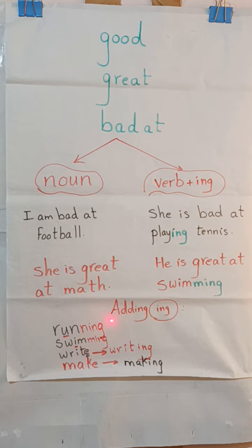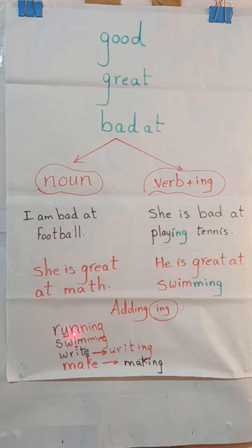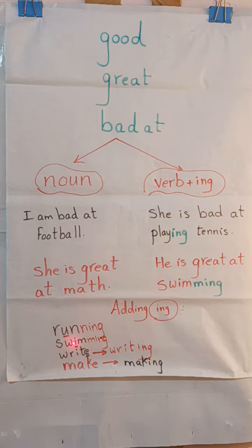Now take care of this part. When I add -ing to a verb like 'run' or 'swim,' I must double the last letter, because the last letter is preceded by a vowel. We have five vowels: a, e, i, o, and u.